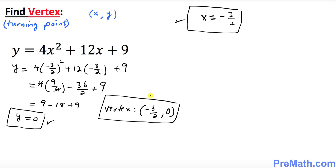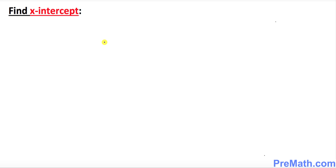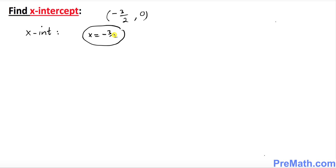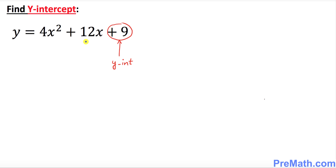Whenever the y-value of the vertex is 0, the vertex is the same as the x-intercept. So our x-intercept is (negative 3 over 2, 0), meaning x equals negative 3 over 2 — our only x-intercept. To find the y-intercept, the easiest way is to look at the constant term, which is 9. So our y-intercept is positive 9.